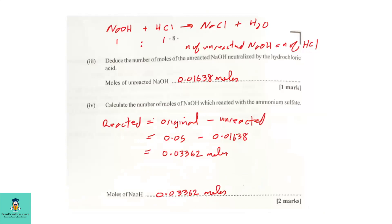Let's look back at that. This was the original moles of sodium hydroxide, which is 0.05 moles. Knowing the number of moles that was the original moles, and we just calculated the unreacted or excess moles of sodium hydroxide, we can now find the number of moles reacted. Now, 0.05 minus 0.01638 gives us the answer 0.03362 moles of sodium hydroxide reacted.